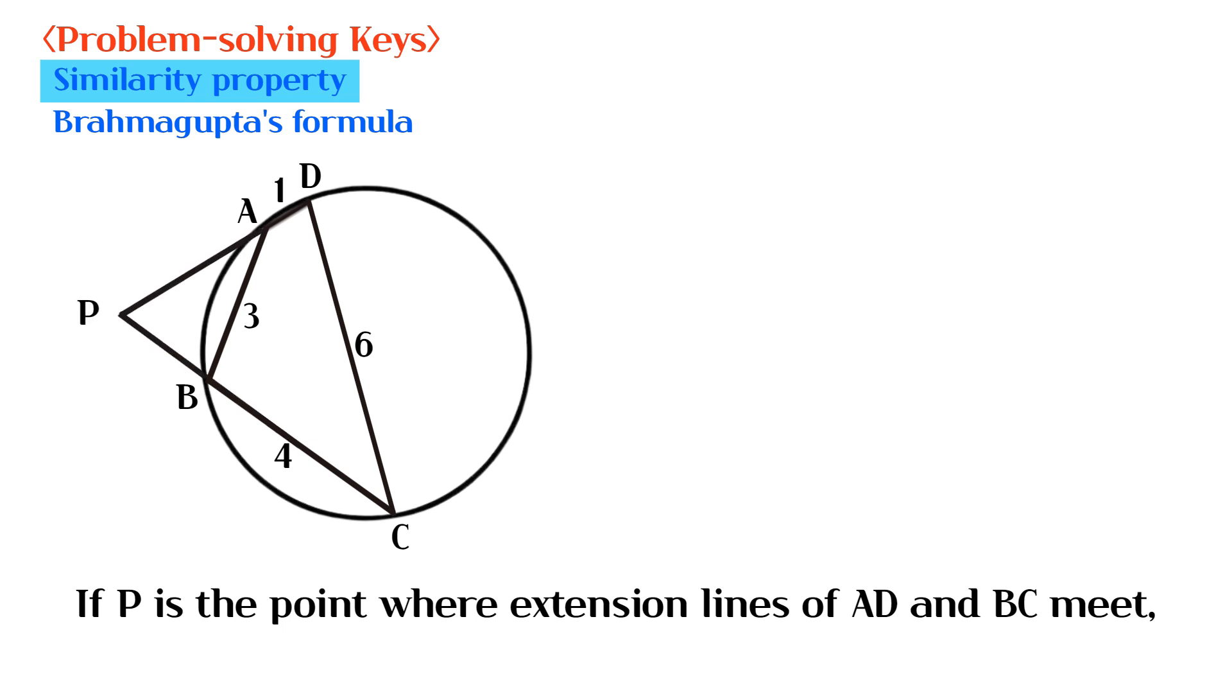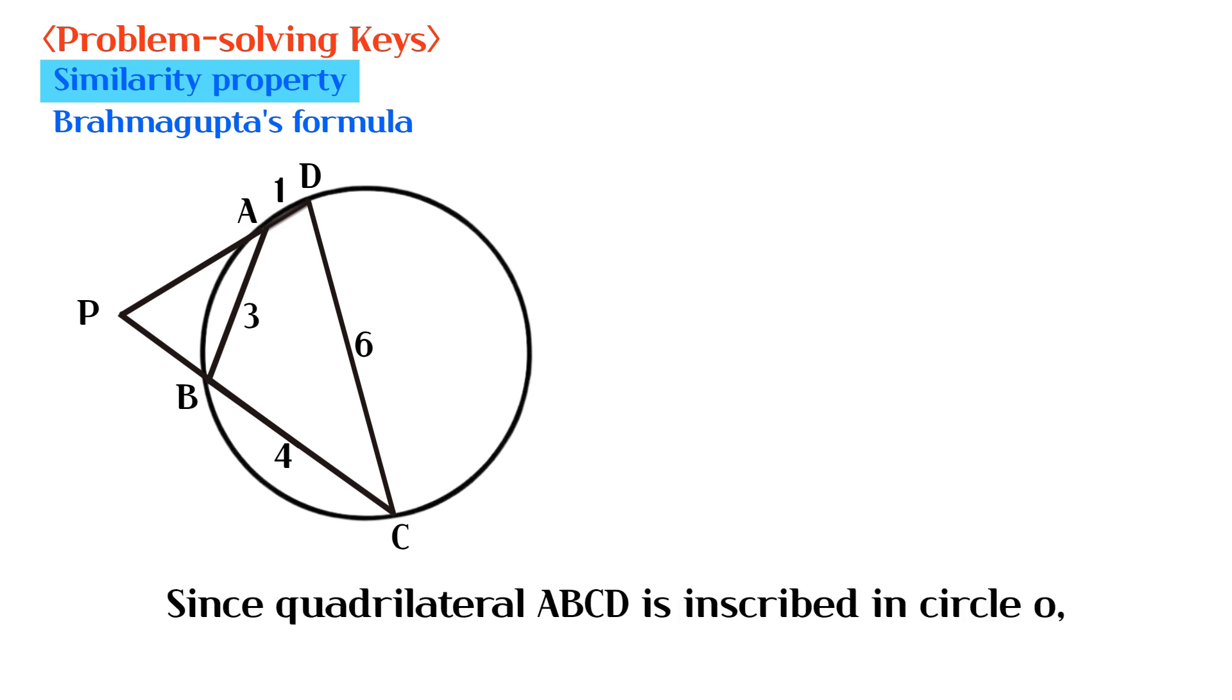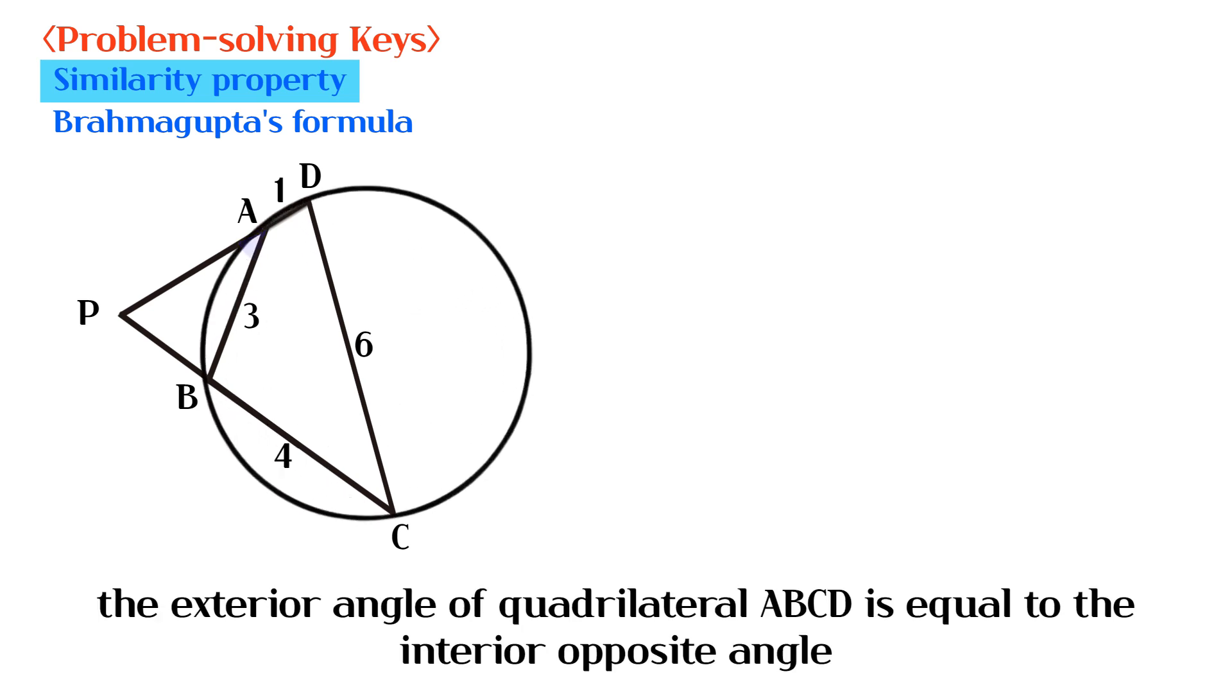If P is the point where the extension lines of AD and BC meet, we can find two similar triangles. Since quadrilateral ABCD is inscribed in circle O, the exterior angle of quadrilateral ABCD is equal to the interior opposite angle.